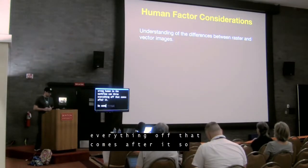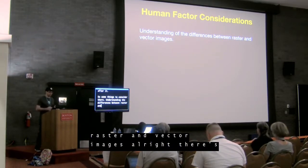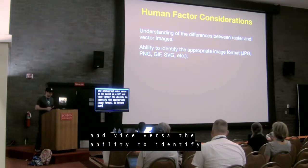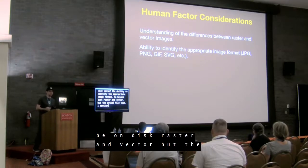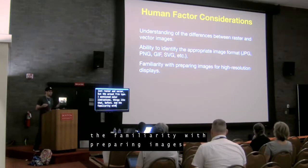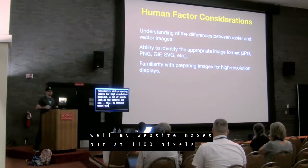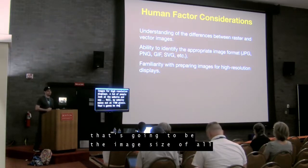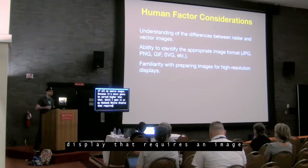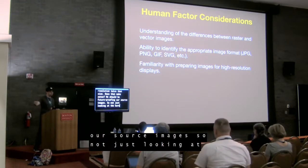Some things to consider: understand the differences between raster and vector images. Does a photograph make sense saved as a GIF and vice versa? The ability to identify the appropriate image format — beyond just raster and vector, but the actual file type and color limitations. And familiarity with preparing images for high resolution displays. A lot of people look at their website and say, my website maxes out at 1100 pixels, so that's my source image size — it's never going to be served higher than that. Until you open it on a MacBook Retina display that requires an image resolution twice that size. We should be future-proofing our source images, not just looking at the bare minimum today.